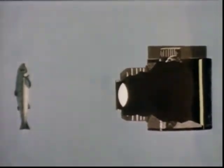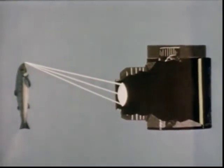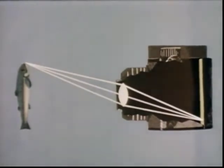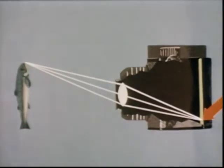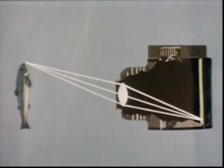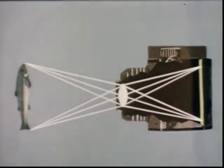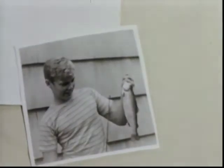Light reflected from, say, the nose of the fish enters the lens where it is refracted and brought into focus on the film. Light from this point on the nose focuses at this point on the film. The same thing happens to the light from a point on the tail and from every other point in the picture area. So it all adds up to an image on the film, which becomes a permanent photographic souvenir printed in Bud's darkroom.